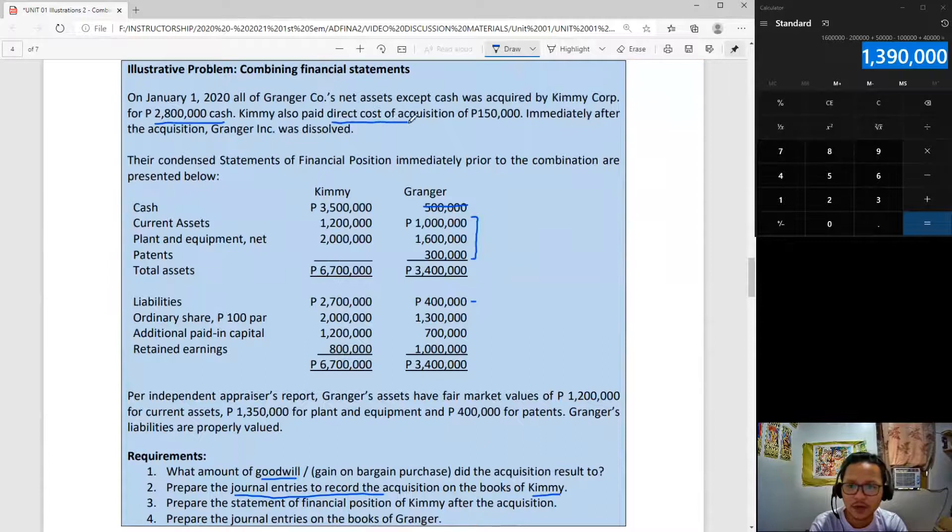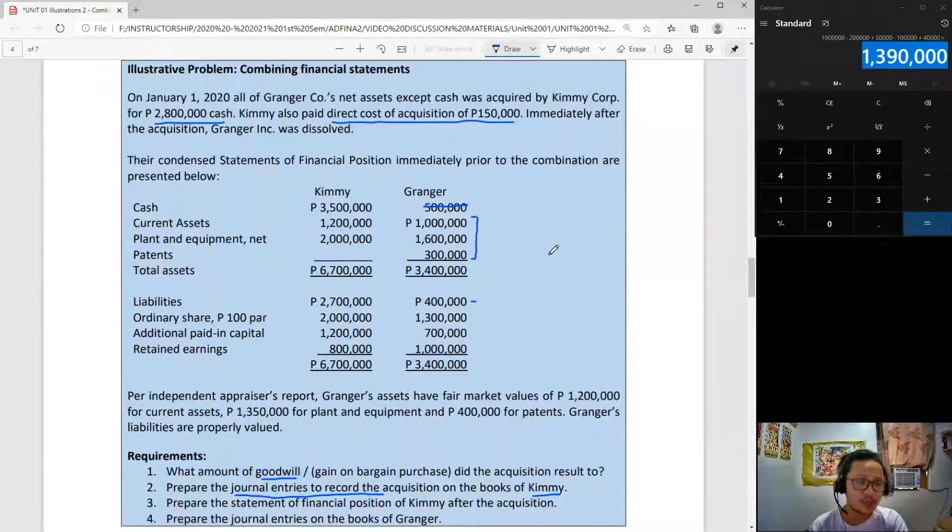Kimi also paid direct cost of acquisition of 150,000. This is business combination expense that is not a component of acquisition cost nor is it capitalized. Immediately after the acquisition, Granger was dissolved. Condensed financial statements are shown here. Let's work with this.